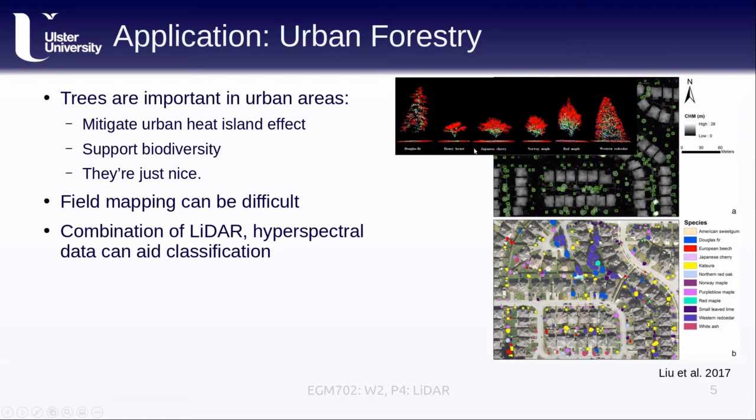We have Douglas fir, honey locust, Japanese cherry, and so on, and they all look quite different in the LiDAR data, which we can use in combination with the hyperspectral data to better classify or more accurately classify the trees in the urban environment.